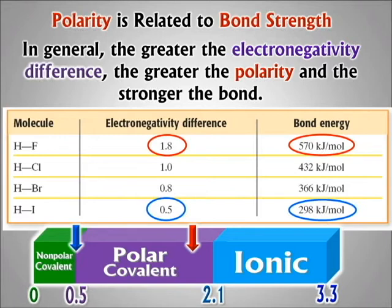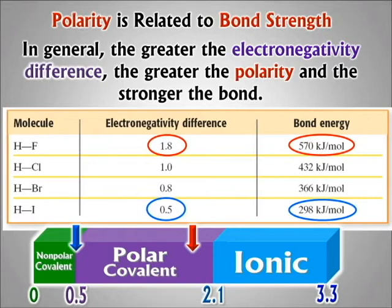What does that mean for bond length? A stronger bond is a shorter bond, because it pulls the nuclei closer together. So the H-F bond would definitely be shorter than the H-I bond. Also, bond energy is the energy that came out when that bond formed — and it takes the same amount of energy to break it as was released when it formed. It's just easier to think about how much it would take to break the bond.